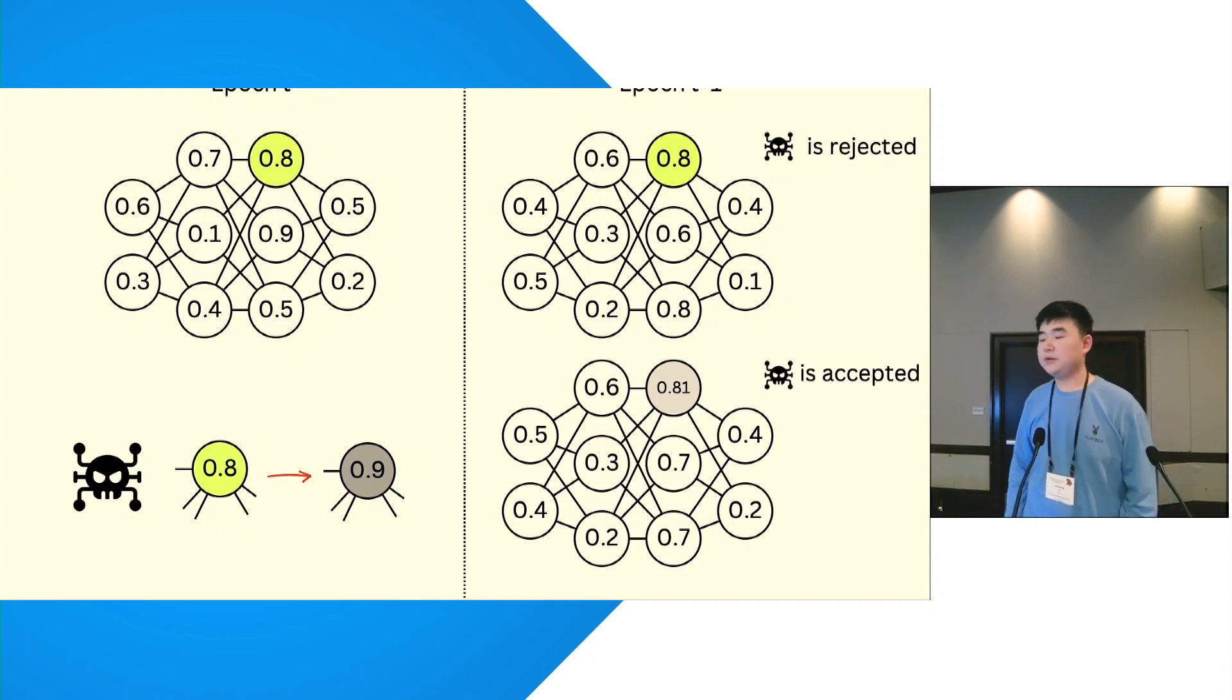If the change is so ignorable that it is below some kind of threshold, then we consider the model was rejected. Otherwise, we consider it as accepted. For how we select such redundant neurons and the threshold of making decisions, we suggest you refer to our paper.